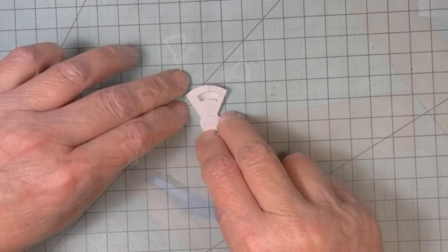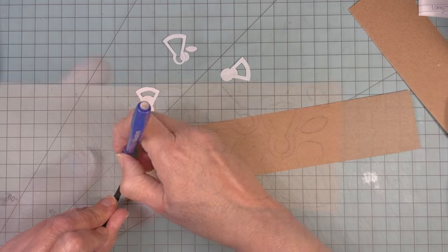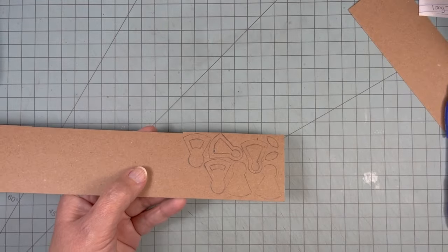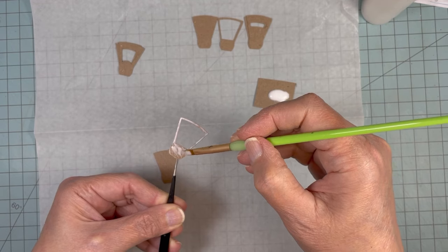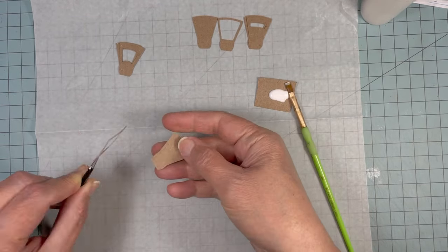I traced it out onto cardstock, but you could use cereal box. I think I traced two of each piece, but it's really up to you how thick you want it. These pieces I cut on my cutting machine, but the assembly is the same.